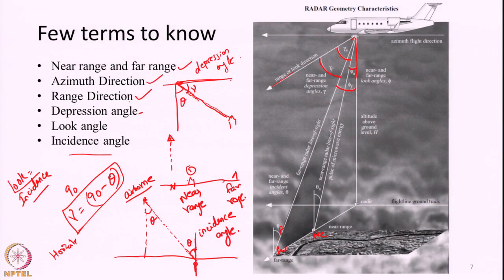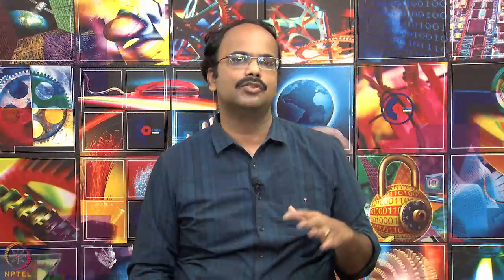Last class we defined a few terms like azimuth direction, range direction, near range, far range, depression angle, look angle, and incidence angle. Basically with respect to all these we will be defining our image acquisition characteristics, and based on these factors — the look angle and incidence angle — the terrain will also look different to us. We will see later that the properties of terrain acquired from radar images will change when we change this observation geometry.